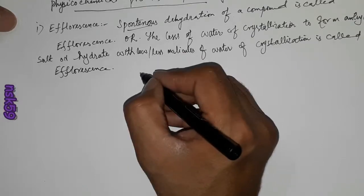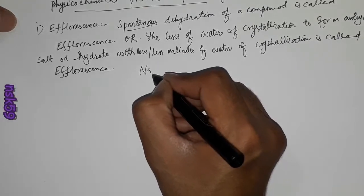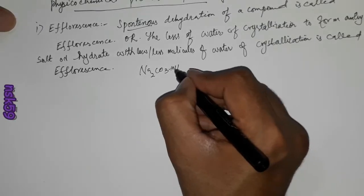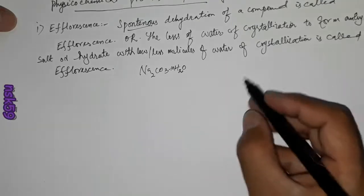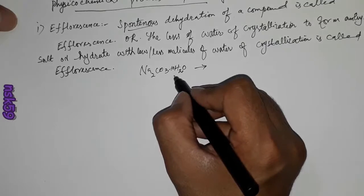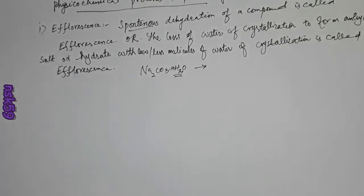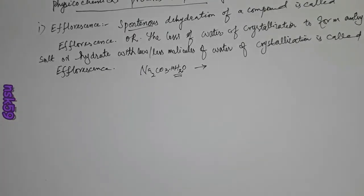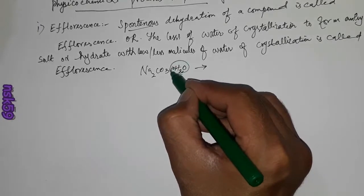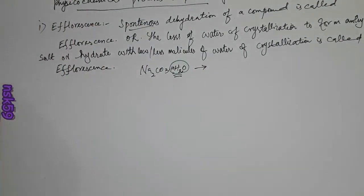For example, sodium carbonate with ten molecules of water of crystallization may lose this water of crystallization to form some lower hydrate, depending upon the condition.